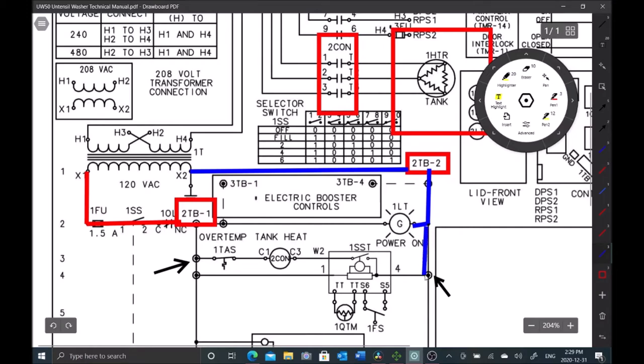We're coming all the way down here and then we have our board here for our float switch. We have our over temp which is the high limit on the tank, and we have power coming to here.